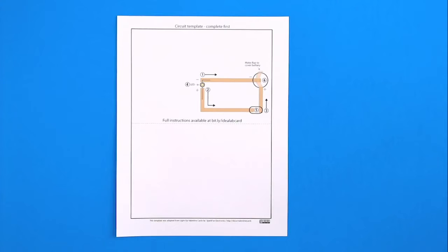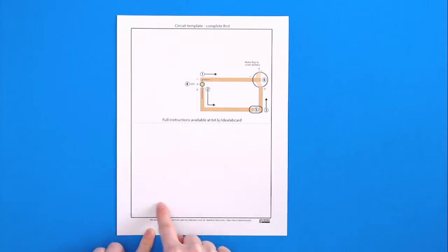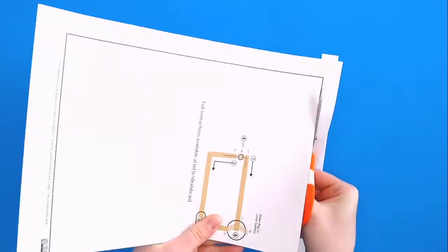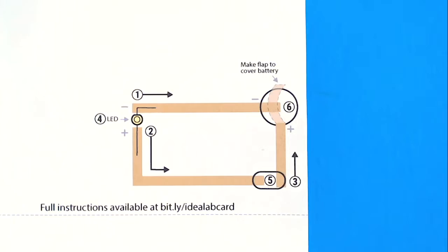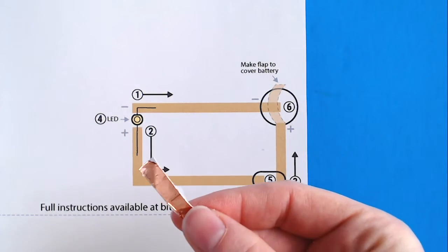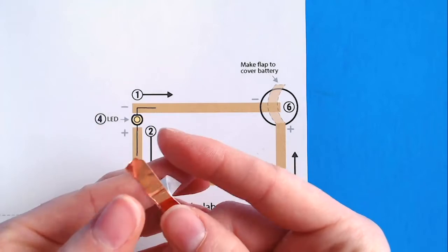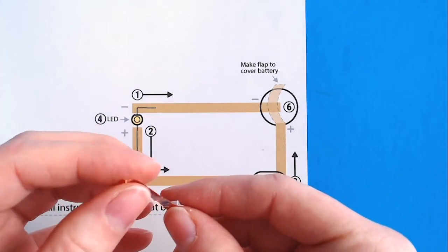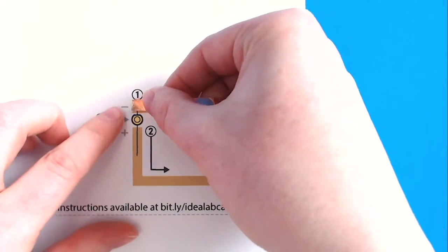Let's start building our circuit. First, trim the extra space around the circuit template with scissors. The template has symbols and numbers to show us where the pieces are going to go. The colored lines are where we'll put our copper tape. The metal in the tape is conductive, which means electricity can easily flow through it. This tape has adhesive on it so you can stick it right to the paper template.